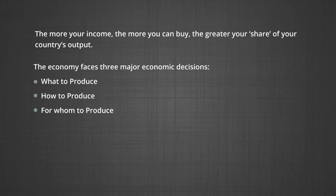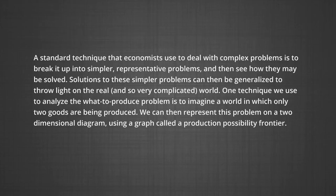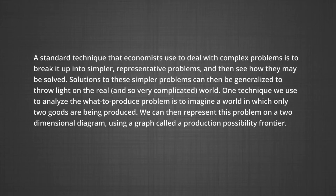Each of these is a complex problem. A standard technique that economists use to deal with complex problems is to break it up into simpler representative problems and then see how they may be solved. A solution to these simpler problems can then be generalized to throw light on the real and complicated world. One technique we use to analyze the 'what to produce' problem is to imagine a world in which only two goods are being produced. We can then represent this problem on a two-dimensional diagram using a graph called a production possibility frontier. A production possibility frontier is the curve representing the maximum of two different goods which an economy can produce, given the technology and the resources it has.